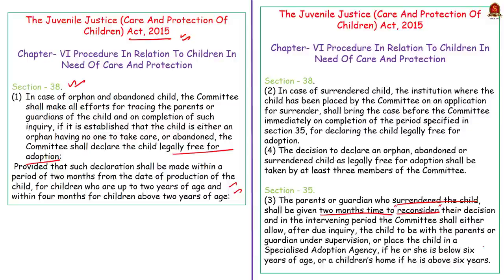After two months, if the parents or guardians are not willing to reconsider their decision, the Child Welfare Committee will declare the child legally free for adoption. The decision to declare an orphaned, abandoned, or surrendered child as legally free for adoption shall be taken by at least three members of the Child Welfare Committee. This is about the procedure for declaring a child as legally free for adoption.